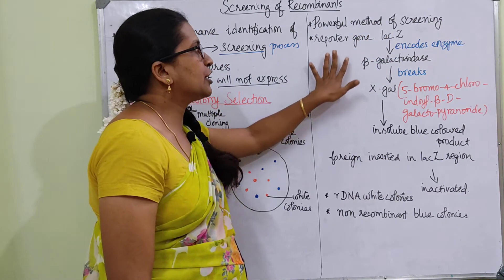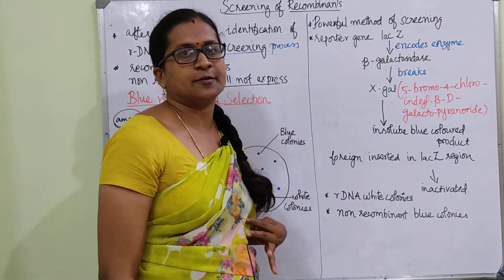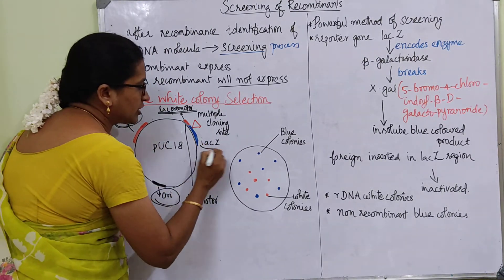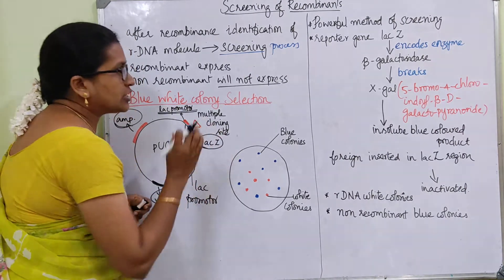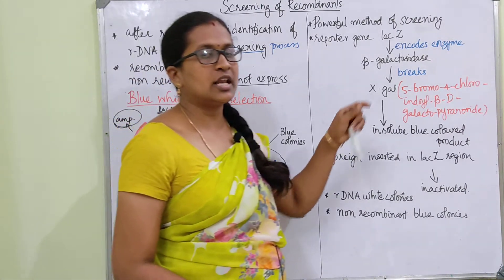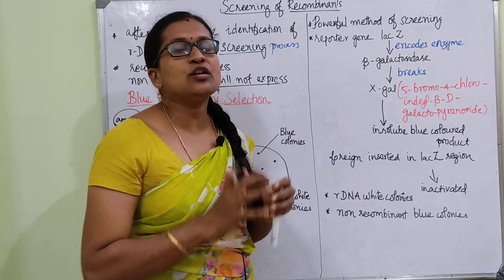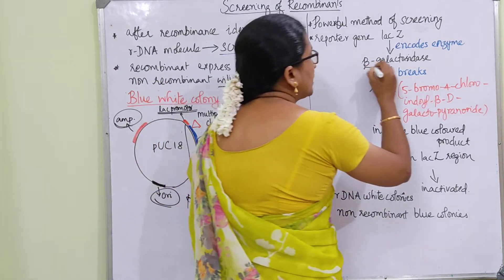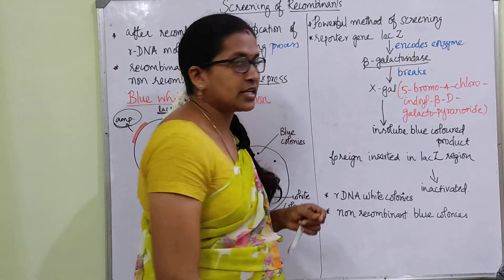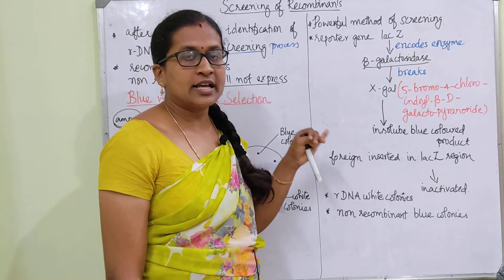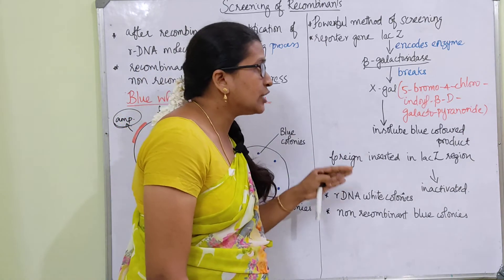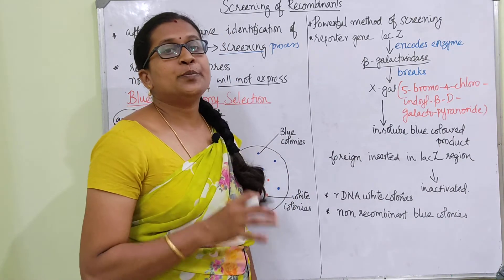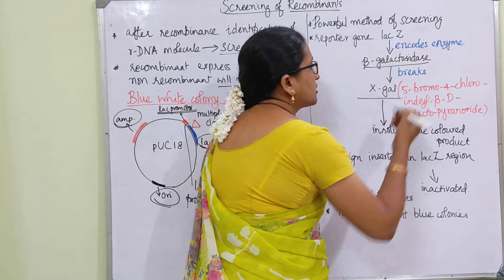The reporter gene is lac Z. Lac Z is going to encode for an enzyme — beta-galactosidase. When the beta-galactosidase enzyme is produced, it is going to break a compound called X-GAL. X-GAL is added to the synthetic medium in the plate where bacteria grow.